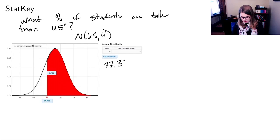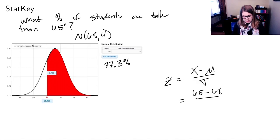But then we could also make a z-score. Remember a z-score is x minus mu over sigma. In this case, x is that 65 inches that we're interested in. Mu is the mean, 68 inches. And sigma is the standard deviation, which is 4. So 65 minus 68 is negative 3 over 4, negative 0.75. So it is 0.75 standard deviations below the mean on a standard normal.